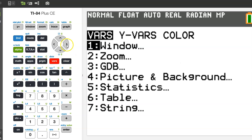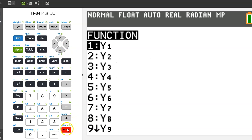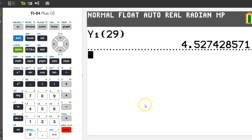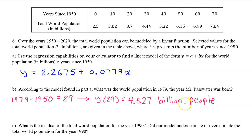Just hit VARS, YVARS, enter, and enter again, to bring up Y1. To evaluate Y1 at 29, just put it in parentheses like this, kabam, 4.527 billion people. Without the units, this answer is meaningless, so be sure to include these units.